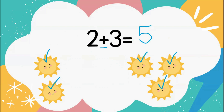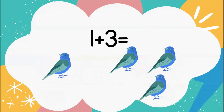Now let's do another addition problem. This time it is 1 plus 3 equals. It is represented by birds, so let's count the total birds: 1, 2, 3, 4. The answer is 4. 1 plus 3 equals 4. Good job.